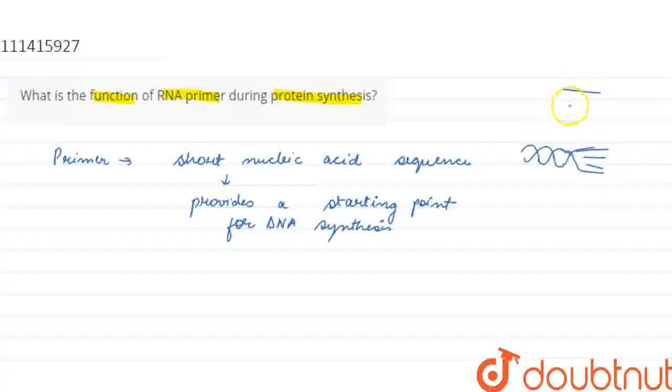Thik hai? To ab obviously agar yahan pe nucleotide bases ko attach karwana hai - jaise yeh ek DNA strand hai, iske side mein hame complementary nucleotide bases lagana hai - to yahan pe obviously pehle koi to nucleotide ka pair hona chahiye, kuch to hona chahiye, jispe aake nucleotide attach karenge. So, this is the primer.